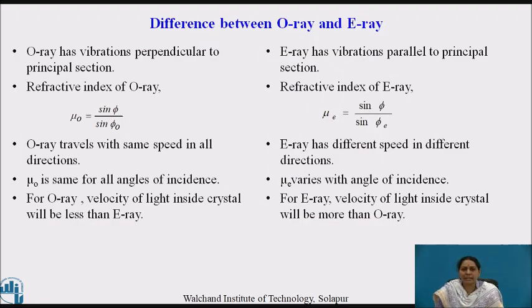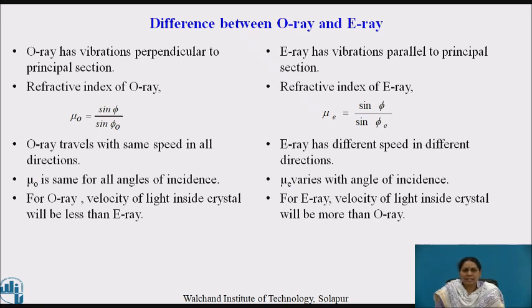Now let us see the difference between ordinary and extraordinary rays. The ordinary ray has vibrations perpendicular to the principal section, while the E-ray has vibrations parallel to the principal section. The O-ray travels with the same speed in all directions, whereas the E-ray travels at different speeds in different directions. The refractive index is the same for all angles of incidence for the O-ray, whereas for the E-ray the refractive index varies with angle of incidence. For the ordinary ray, the velocity of light inside the crystal is less than that of the extraordinary ray, and vice versa.